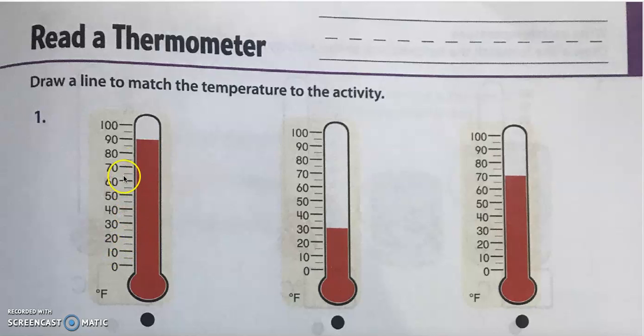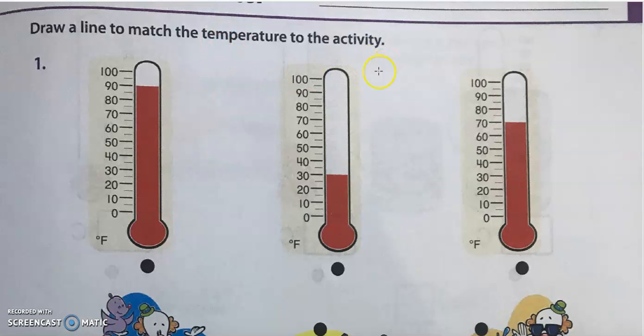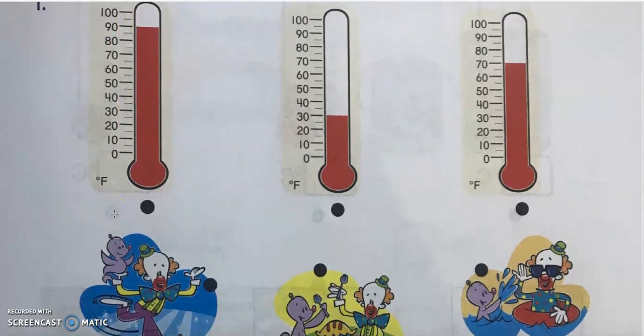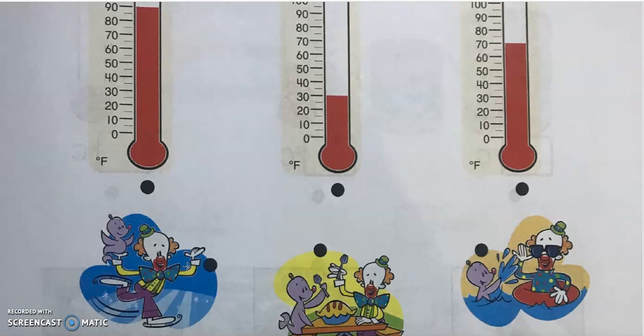So 90 degrees Fahrenheit. In number one we need to draw a line to match the temperature to the activity. The first thermometer shows 90 degrees Fahrenheit and that's about 32 degrees Celsius. So it's quite hot, right? It's like in Korea July-August temperature, I think. So it's summertime.